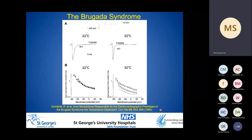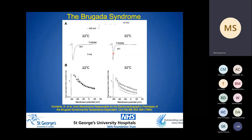Wild-type sodium channels have reduced peak current amplitude and faster kinetics of inactivation at higher temperatures, and this is accentuated in mutant channels. In these patch clamp experiments, sodium channels expressed in a cell model show reduced peak amplitude and steeper inactivation at 32 degrees compared to 22 degrees. The time constant for inactivation is shorter at higher temperatures and more so in mutant channels at all voltages. This explains why some patients have only a provoked type 1 Brugada ECG pattern in the presence of fever, and in other cases with offending drugs.